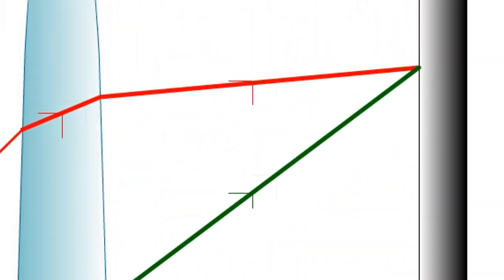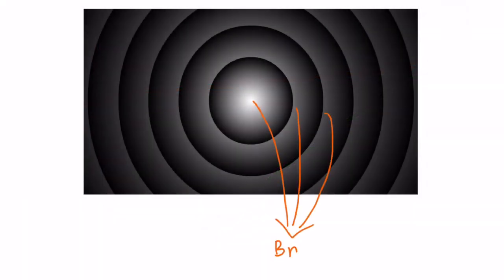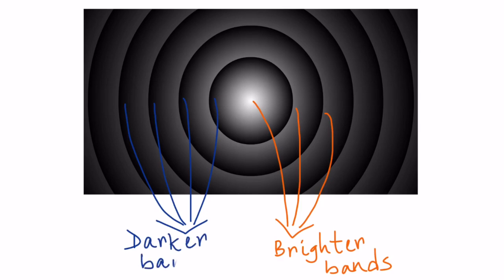In the Fabry-Perot interferometer, multiple waves of different amplitudes interfere on the screen, producing a pattern of bright and dark bands. The brightness of these bands is determined by the extent to which the waves constructively interfere. Complete constructive interference results in the brightest bands, while partial constructive interference results in the darker bands.